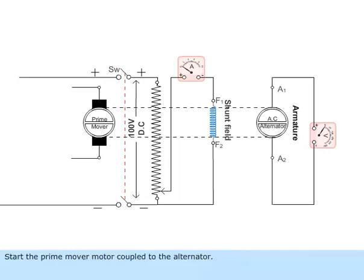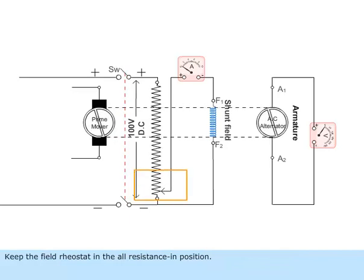Start the prime mover motor coupled to the alternator. Pick up to rated speed of the alternator by adjusting the speed of the motor. Keep the field rheostat in the all resistance in position.